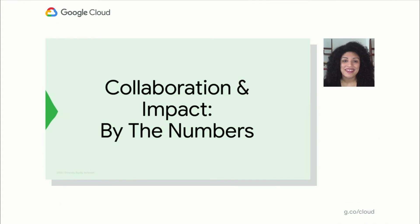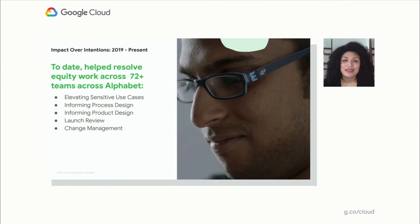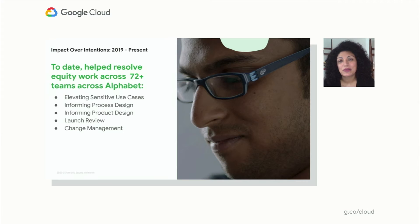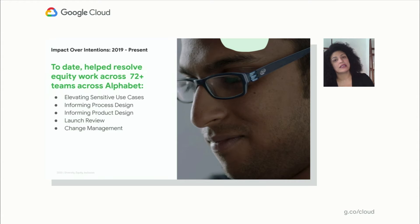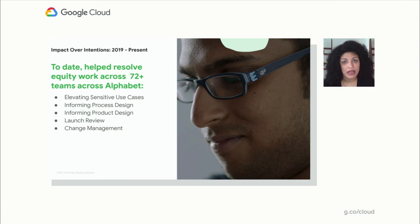Now let's talk about the collaboration model and how it's driven so much impact across our company. To date, just over the last 18 months, we have worked across 72 different teams across Alphabet. Oftentimes an issue that we think only impacts Google really impacts multiple of our bets. We've had the pleasure of working across the entire Alphabet community, and we've done that by helping to elevate sensitive use cases — taking the burden off of marginalized communities from having to describe their own challenges with our processes and products.